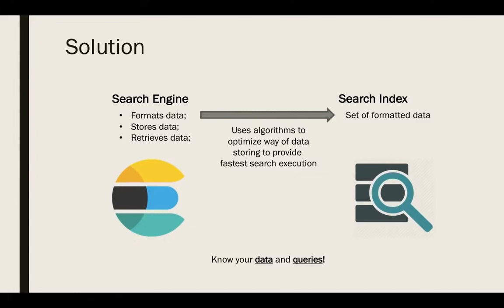Trying to resolve those problems, we created what is called a search engine. Elasticsearch is a search engine whose main purpose is formatting, storing, and retrieving data. When a search engine creates a search index — a set of formatted data — it uses smart algorithms to optimize querying, speeding up searches by changing data order and storing it in different formats. The main point is that a search engine is shaped perfectly for search and can do it much faster than native SQL.